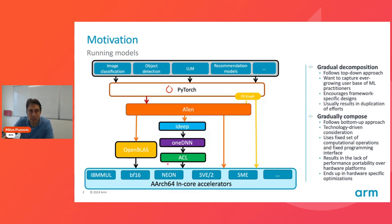The advantage of this approach is that it is very fast, it encourages framework-specific designs, and it can grow very quickly your user base of DNR practitioners because you can easily map those high-level operators to low-level library calls. The problem with this approach, as you can probably notice here, is that it can duplicate effort because you might end up having the same implementations in OpenBLAS and ACL. Another approach which has been introduced in the PyTorch compiler, PyTorch 2.0, is more of a bottom-up approach, which is addressing technology-driven considerations. So in this case, what you would do is that you would use a fixed set of computational operations and a fixed programming interface such that you would lower a linear operator into a set of A10 core ops. And from then on, you can use the techniques from compilers to lower that down to generate the efficient code that can make use of your in-core accelerators.